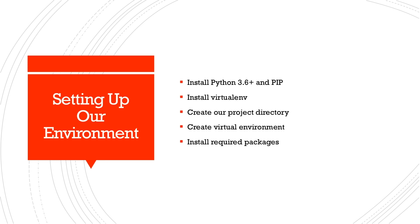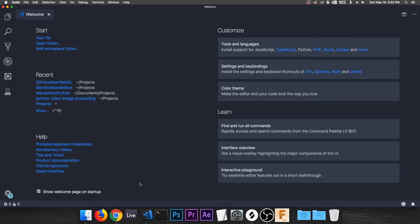Let's start by setting up our environment. We need to install Python 3.6 or newer — the current version is 3.7 — and pip. Then we're going to install the virtualenv package from pip, create our project directory, set up folders, create a virtual environment, and install the required packages.